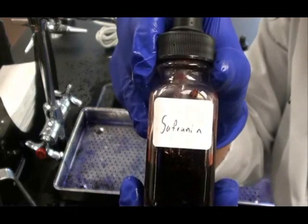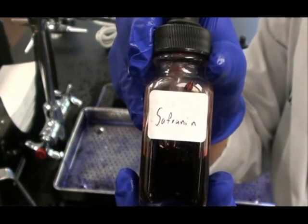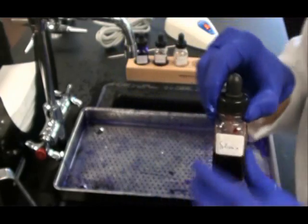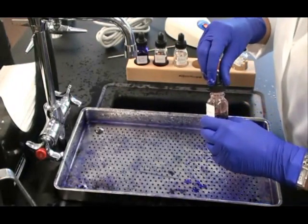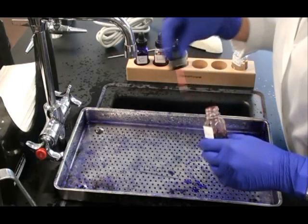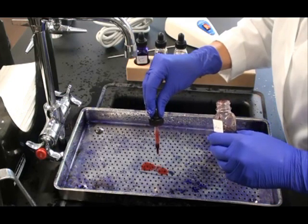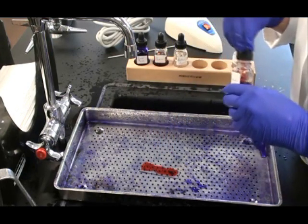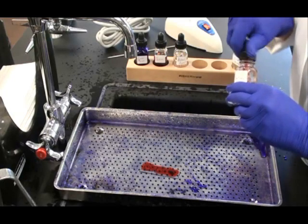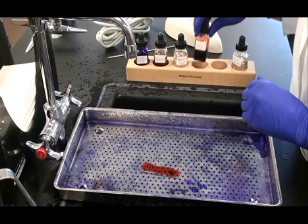We use Safranin as a counter stain because it's pink in contrast to the purple crystal violet. I let the drops of Safranin fall onto the slide. Making sure I cover all three bacterial smears. And then I wait for one minute.